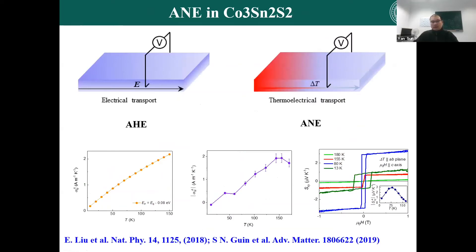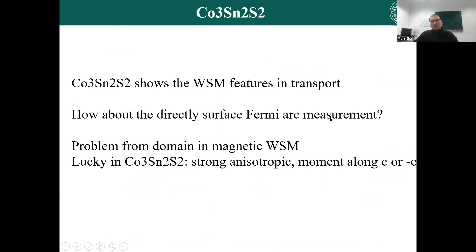If we replace the electric field, one can also find a strong anomalous Nernst effect. This is similar to the anomalous Hall effect, but with a perturbation from a temperature gradient. So far, from analyzing the transport properties, we have a very strong signature of the topological band structure and the Weyl semimetal band structure.